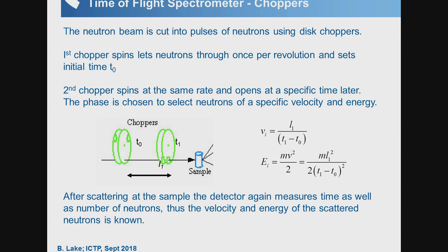The first chopper gives a white-beam pulse starting at time t0. A second chopper placed a known distance away opens at a selected time later. Knowing the time difference and the distance between the choppers, you know the velocity of the neutrons. Two choppers therefore allow only neutrons with a particular velocity — and hence a particular kinetic energy and wavelength — to pass through.